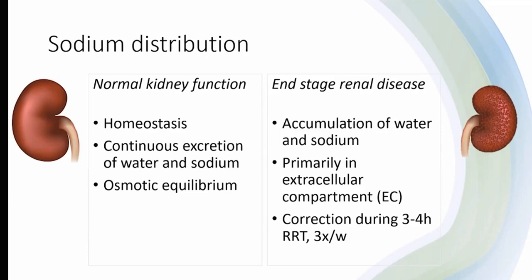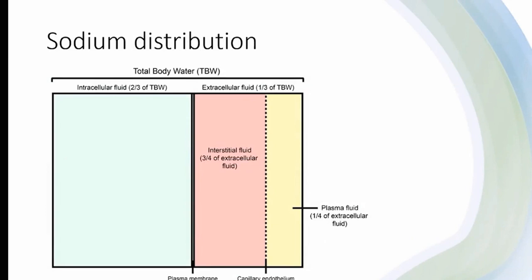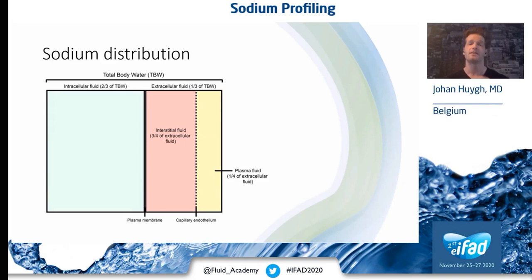Fluids accumulate in patients primarily in the extracellular fluid compartments. Cells have the ability to maintain their volume status for prolonged periods of time, but it's the extracellular fluid compartment that has the storage capacity. We've monitored this with bioimpedance studies and tracer dilution studies, and we can tell that expansion of the extracellular fluid compartment in our dialysis patients is responsible for hypertension, impaired cardiovascular status, and edema.